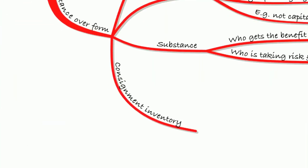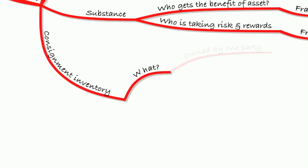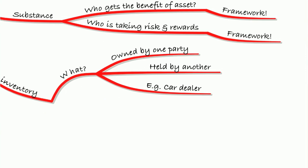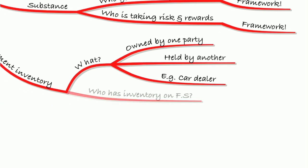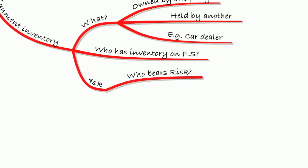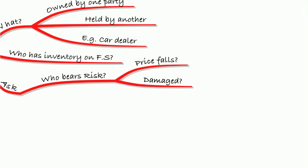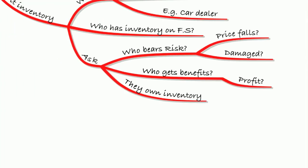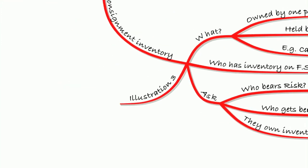We also looked at consignment inventory — inventory owned by one party and held by another, for example a car dealer. Mercedes makes cars and sends them to dealers who sell them on their behalf. To determine who owns that inventory, you ask: who bears the risks (e.g. of prices falling or damage to the cars) and who gets the benefit (i.e. the profit when sold)? Whoever bears the risks and gets the benefits owns the inventory. You need to look in detail at the contract, as we did in Illustration 3.